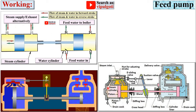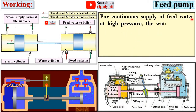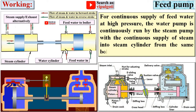These figures show the duplex double-acting feed pump from different diagrams to understand the working. For continuous supply of feed water at high pressure, the water pump is continuously run by the steam pump due to the expansion of steam in the steam cylinder, and this high pressure feed water is then supplied to the boiler.